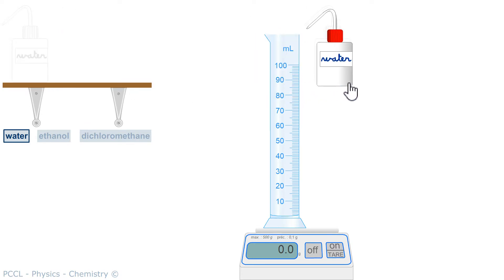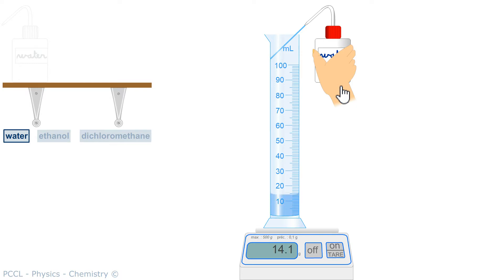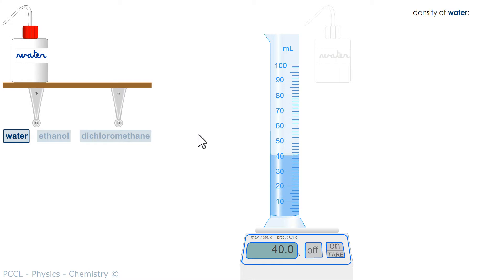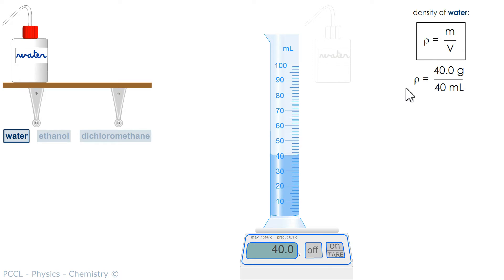I do it here with water. For units, I will have milliliters with a graduated cylinder, and for mass, the scale gives me grams. I calculate the density of water by dividing the mass by the volume. The symbol is the letter rho from the Greek alphabet. The density, if I divide 40 by 40, in grams per milliliter, gives 1.